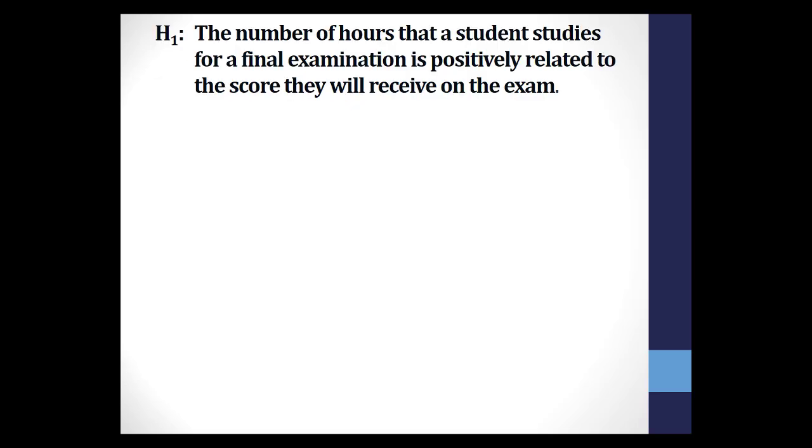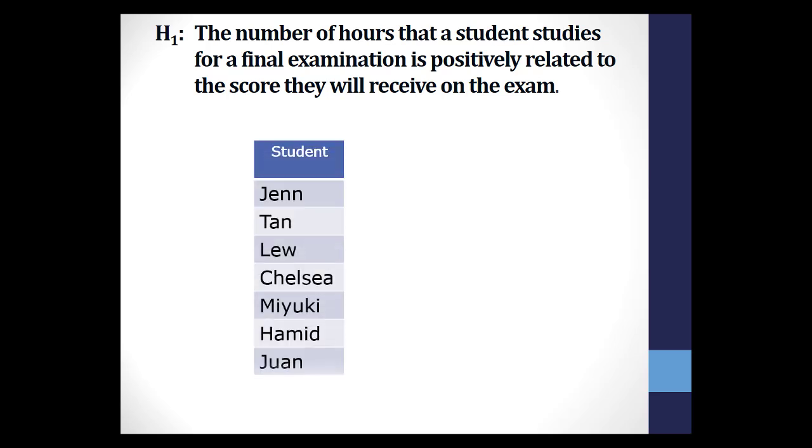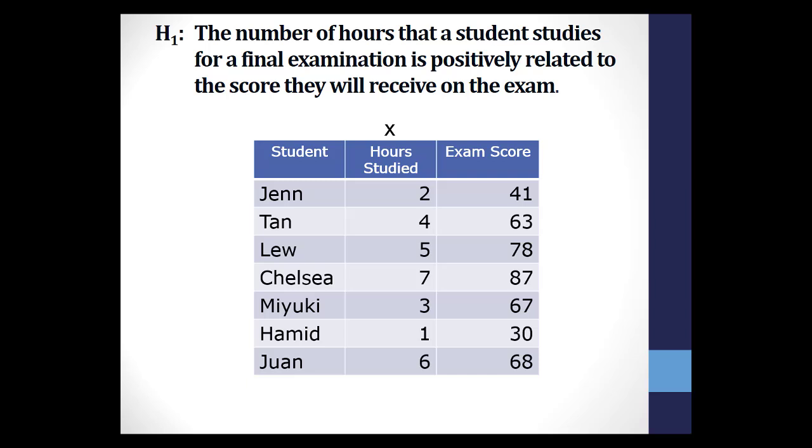Back to our hypothesis that there is a correlation between the number of hours spent studying for an exam and the resulting score on the final examination. You gather data from seven students on the hours they studied, which we will call the x variable, and their exam scores, the y variable. So the n for each variable is seven. Even though you have 14 observations, seven for the x variable and seven for the y variable, you really have seven sets of paired scores. So n equals seven.